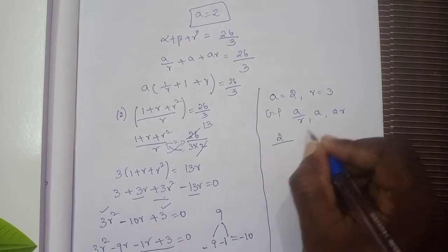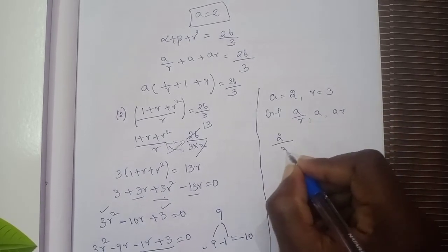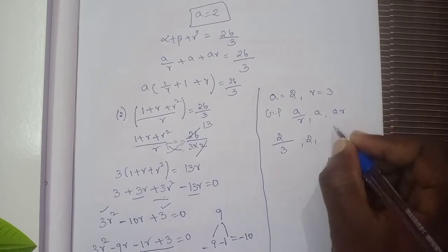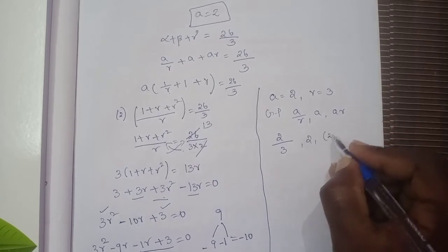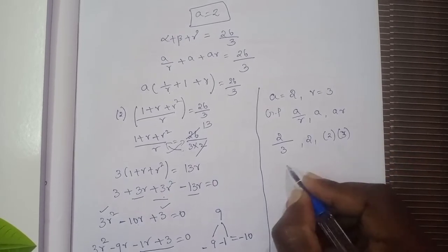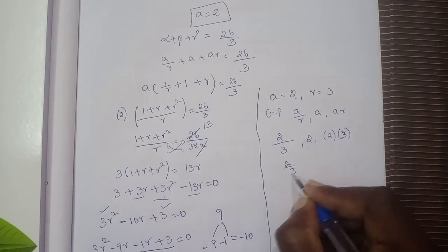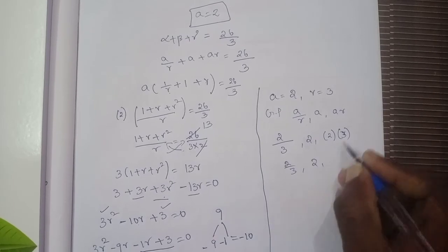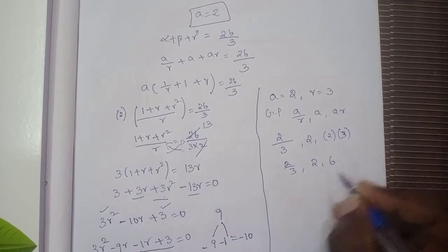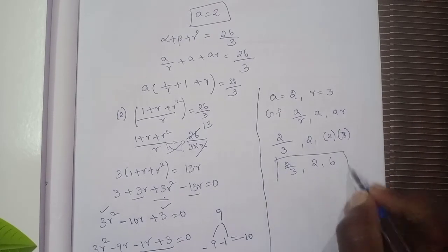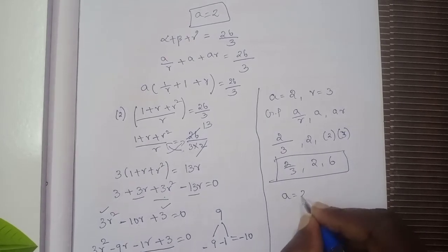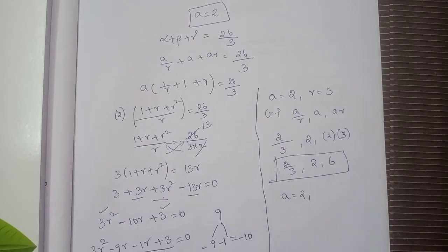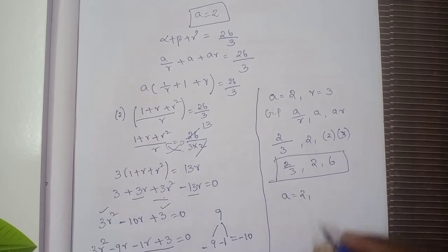Taking a = 2, r = 3: the roots are a/r = 2/3, a = 2, and ar = 6. These form a geometric progression.